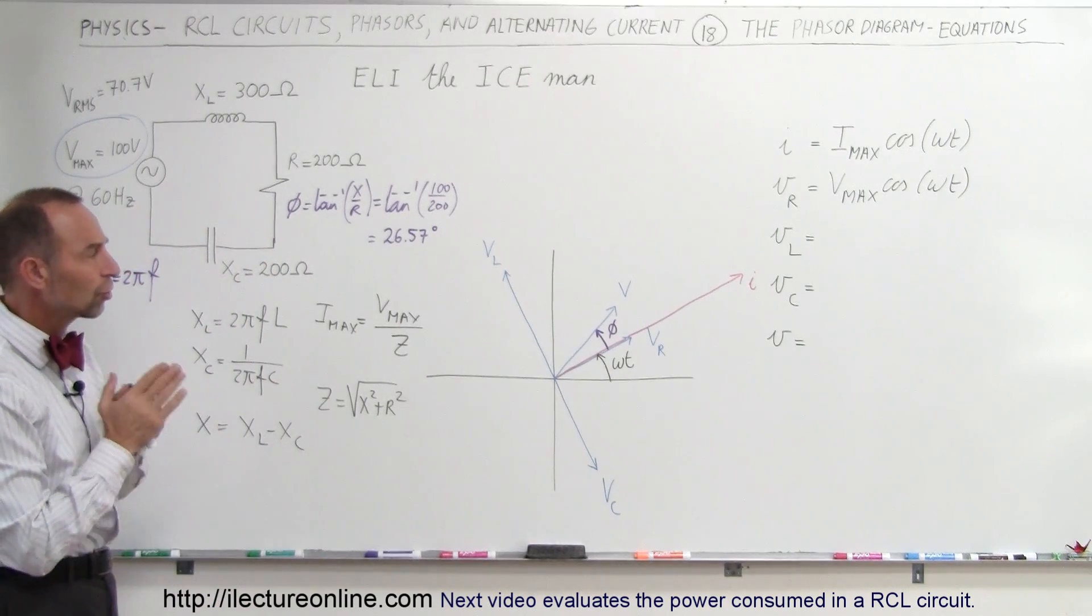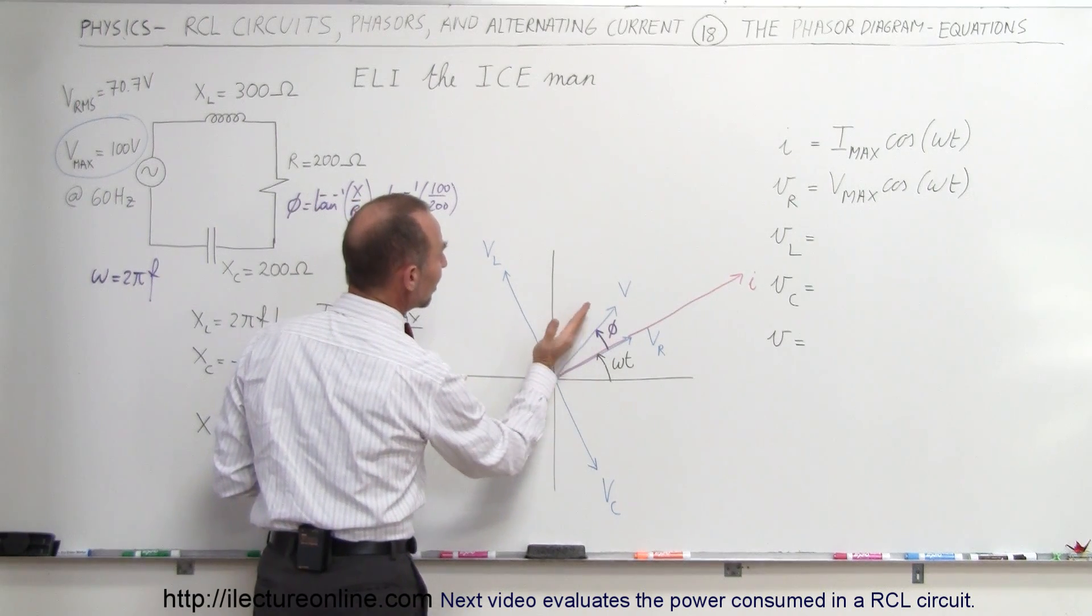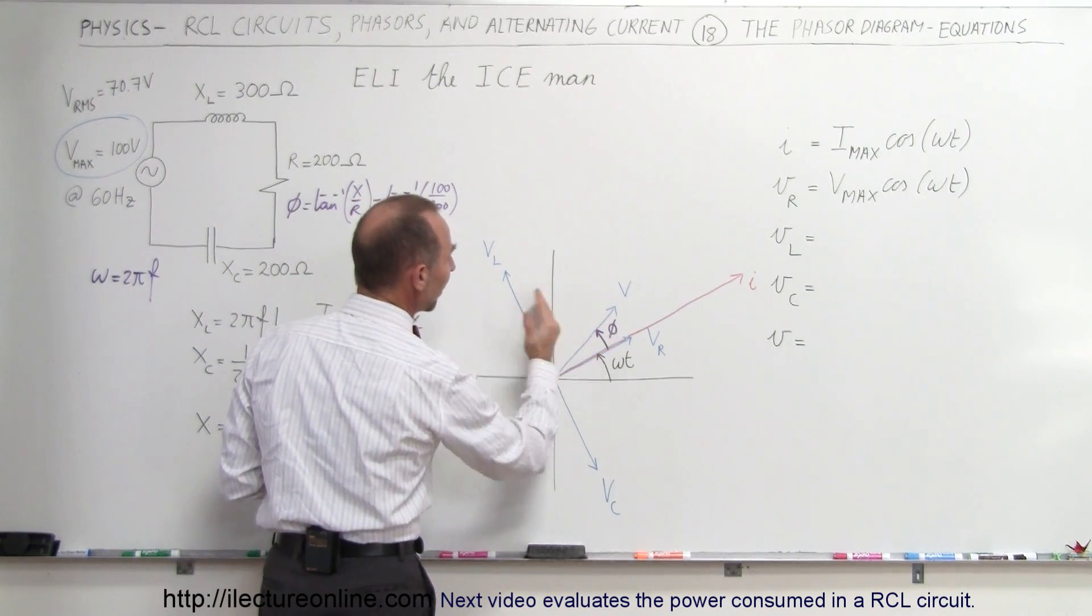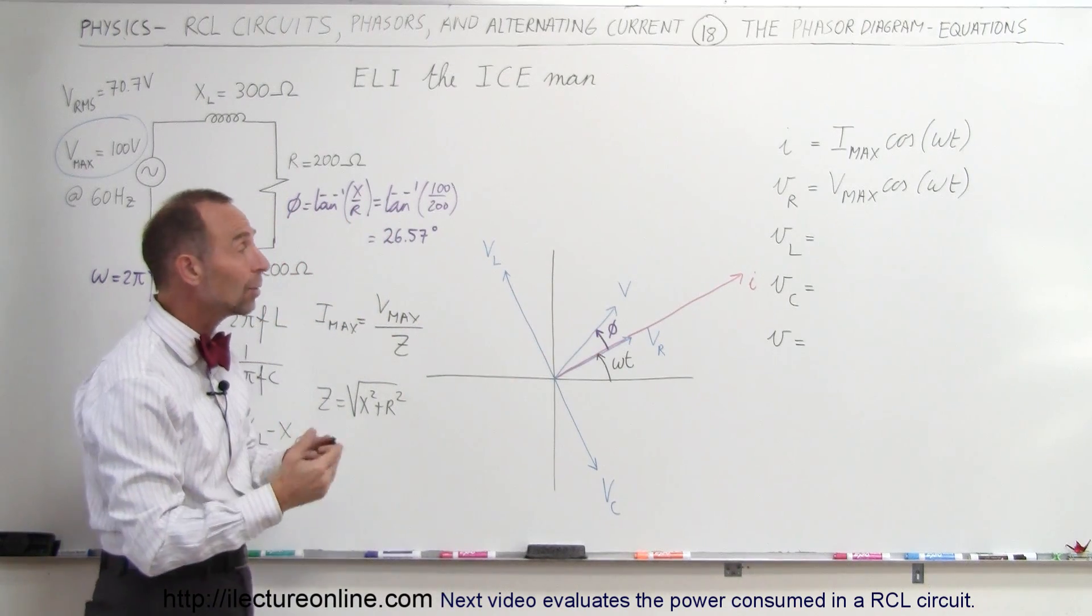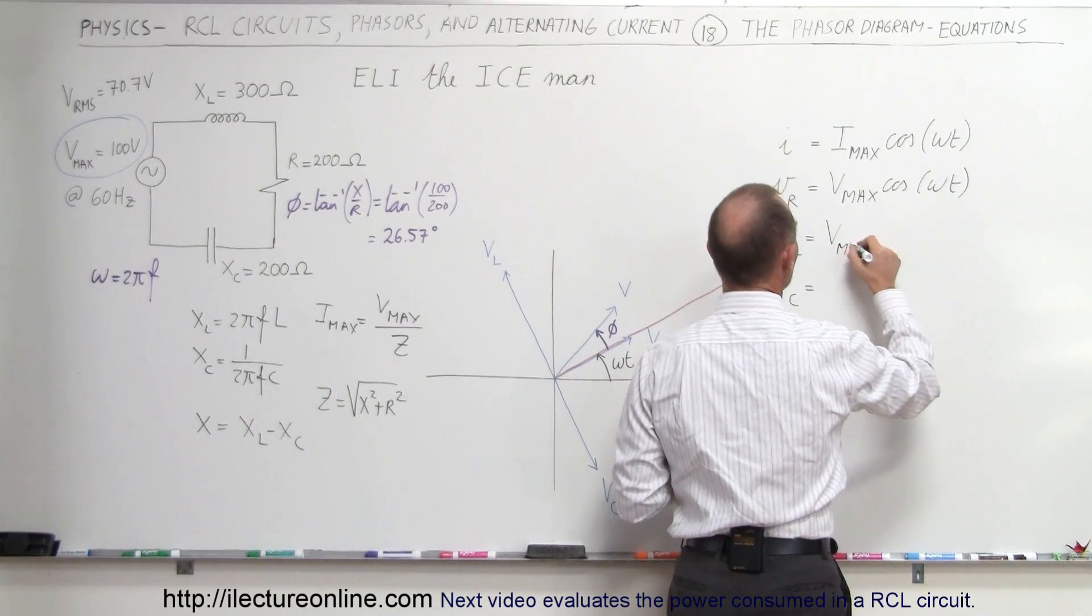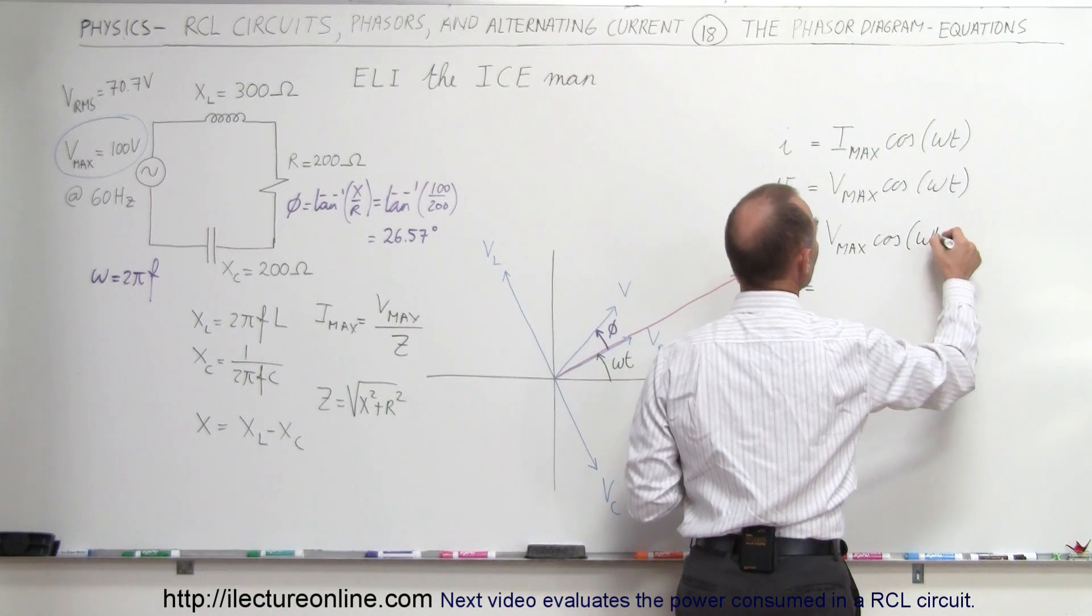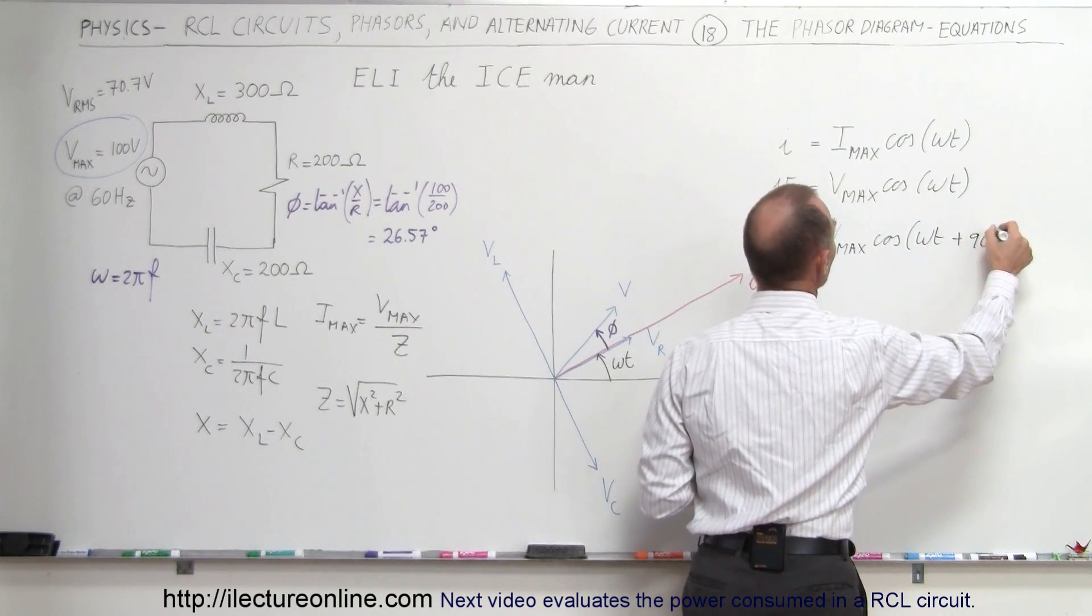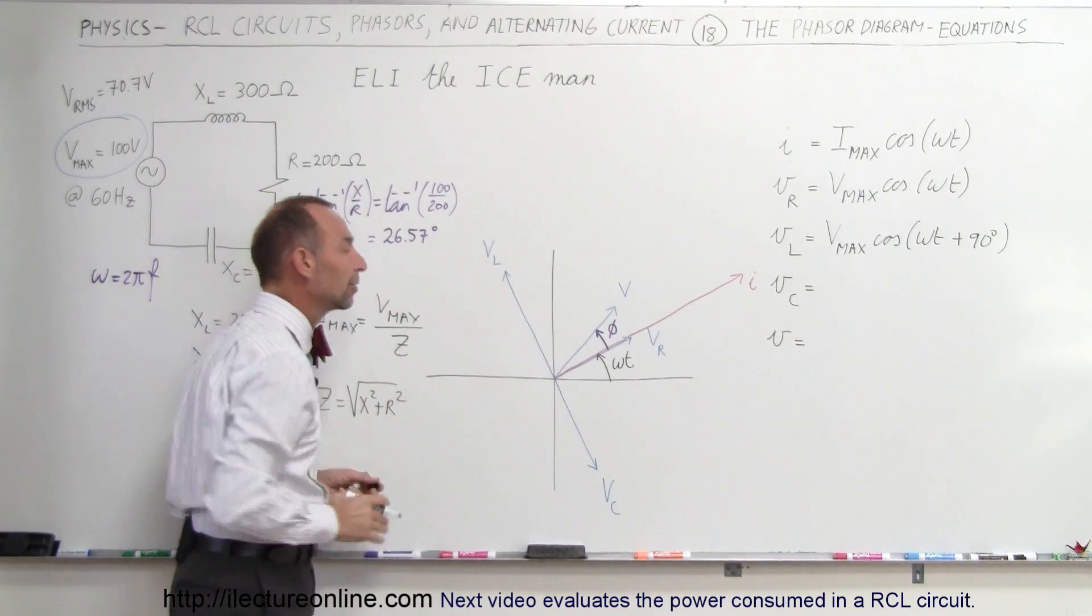All right, what about the voltage across the inductor? Notice that the voltage across the inductor is 90 degrees ahead in time, ahead in phase, compared to the voltage across the resistor. So therefore, we have to add the 90 degrees. That's equal to V max times the cosine of omega T plus 90 degrees because the inductor is already 90 degrees ahead in phase compared to the resistor.